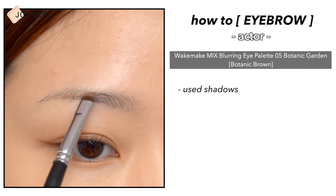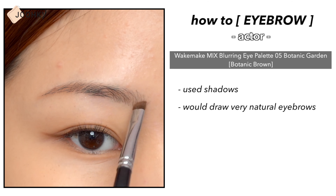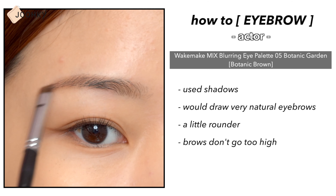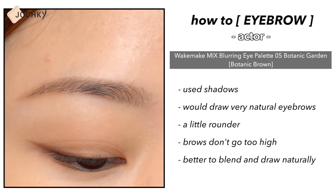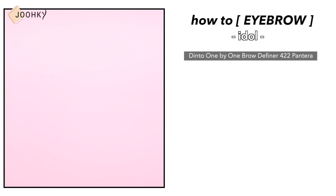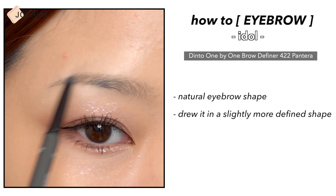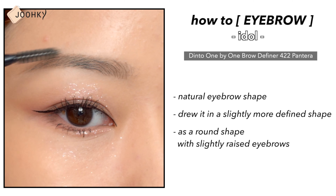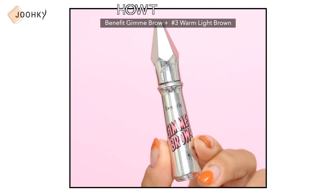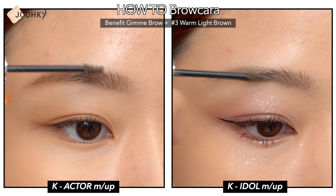For eyebrows, I use shadows to draw very natural eyebrows for the actor makeup. I'll make them a little rounder so that the brows don't go too high — it's better to blend and draw naturally rather than create a vivid eyebrow shape. For the idol makeup, I use Thinto's Dante 1x1 Brow Definer 422 Pantera. It's a natural eyebrow shape, but I drew it in a slightly more defined shape — a round shape with slightly raised eyebrows. To give both looks a more natural finish, I used a Brow Cara similar to my hair color.